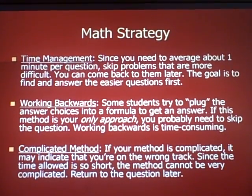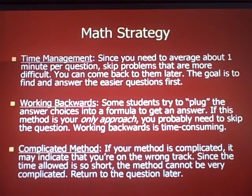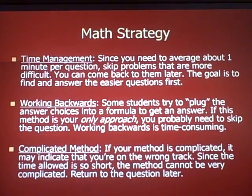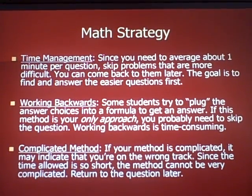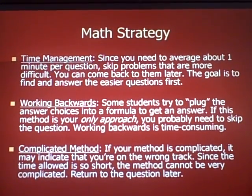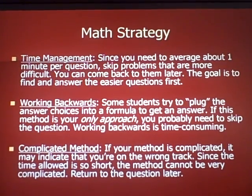If the method you're using is complicated — five or six steps long — it may indicate you're on the wrong track. The time allotted for the exam is so short that the method can't be that complicated. So if you feel like it's taking a long time, even if you know the method, it may mean you're going the wrong way. Return to that question later.